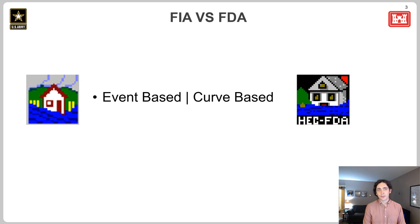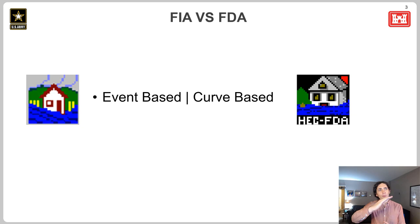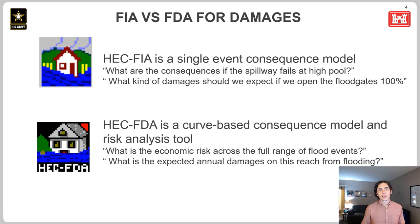A lot of this course, you're going to be focused on FDA. So here I want to draw a really strict difference between FIA and FDA. FIA is looking at the world one event at a time, whereas FDA is looking at the world all at once — it's looking at a whole frequency curve of possible events, not just one event at a time. FIA is a single event consequence model. FDA is a curve-based consequence model and a risk analysis tool.